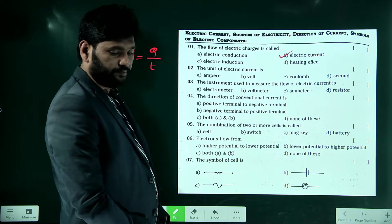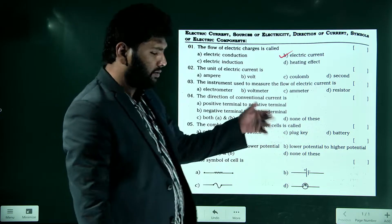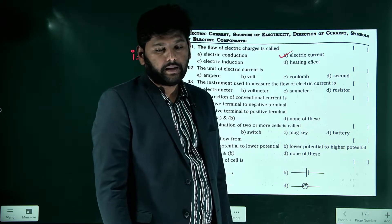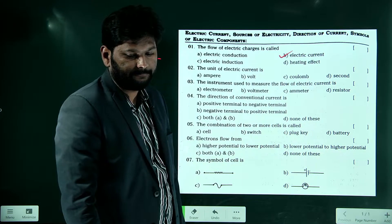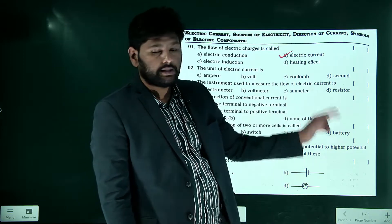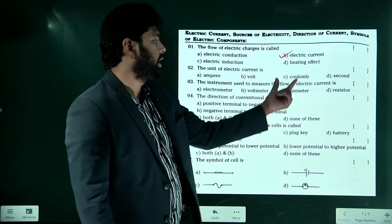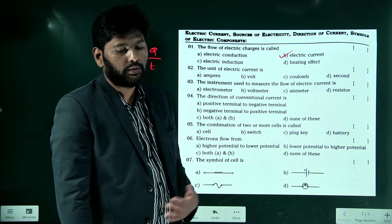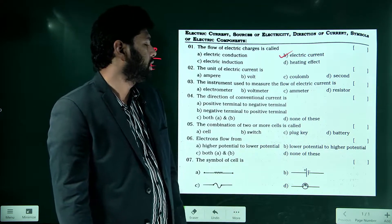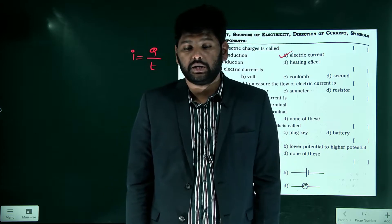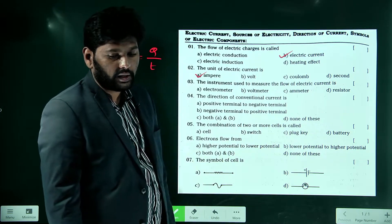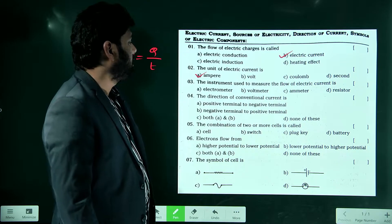The unit of electric current is — second, coulomb, volt, or ampere? Second is a unit for time, coulomb is a unit for charge, and volt is a unit for potential difference. So the answer is ampere, which is the unit for electric current.